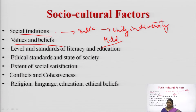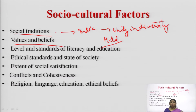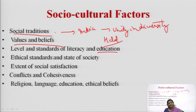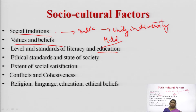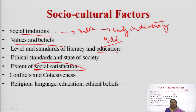Next is the level and standards of literacy and education. For example, if I am selling a product that is technologically very advanced and requires a lot of technological knowledge to operate, it will be impossible to sell in a region where people are not educated. Similarly, social satisfaction — how people are satisfied in a particular society — also creates space for enterprises working in that region.